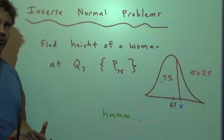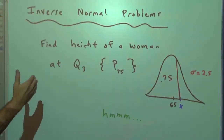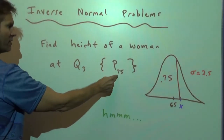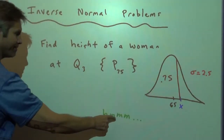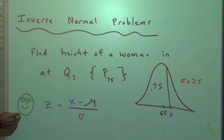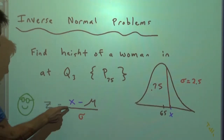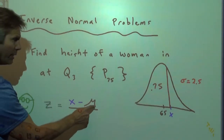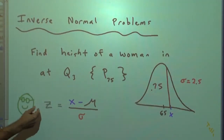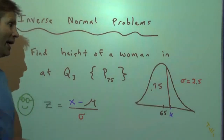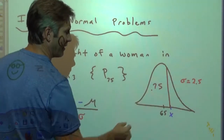We're going to shift gears and do an inverse normal problem. Find the unknown height of a woman who is at the third quartile, meaning she's at the 75th percentile — her height has 75% of all heights below it. We can work through the z-score formula: the unknown x goes here, the known mean of 65 goes here, the known standard deviation of 2.5 goes here. If we just had a z-score to plug in — there's only one z-score in any normal distribution that traps 75% below it.